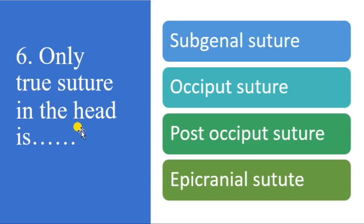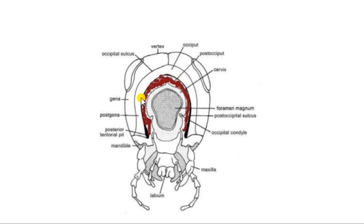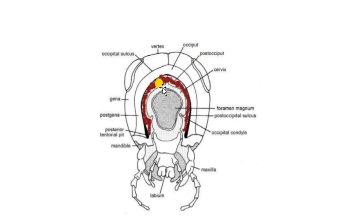The next question: only true suture in the insect head. Among all the different kinds of sutures, the only true suture is the post-occipital suture, which divides two different parts — specifically dividing the head from the thorax. All other sutures such as the subgenal suture, occipital suture, and epicranial suture are inside the head, dividing different segments of the head.